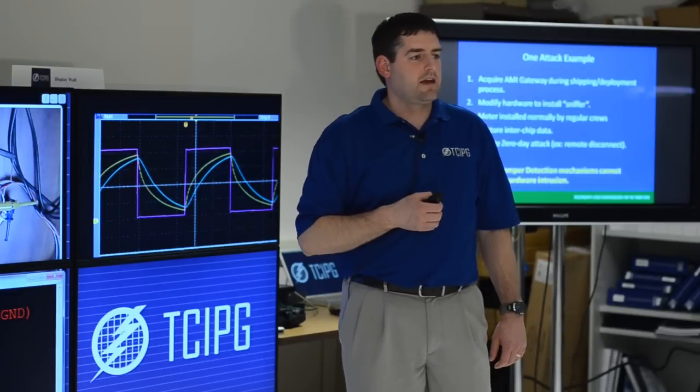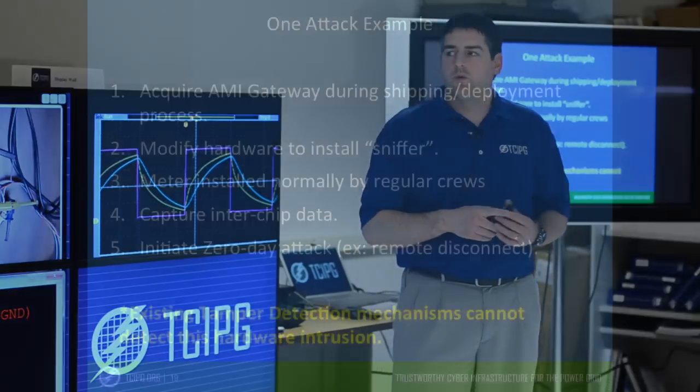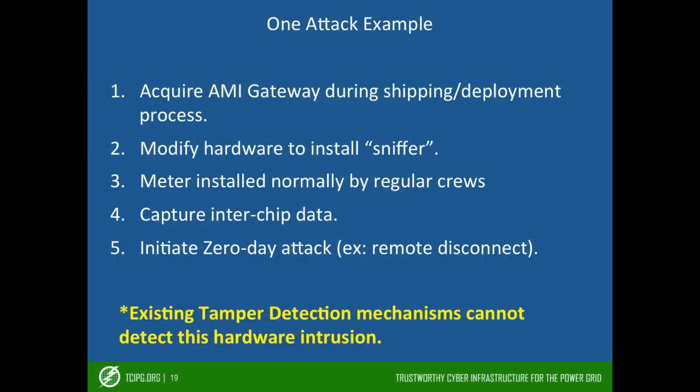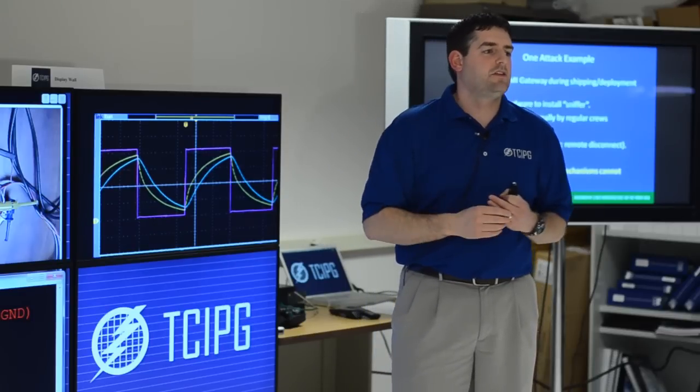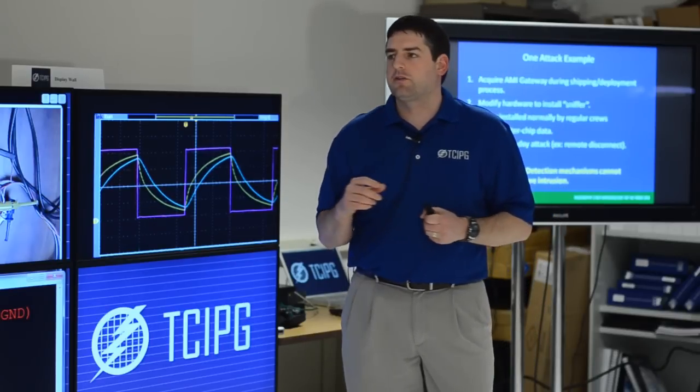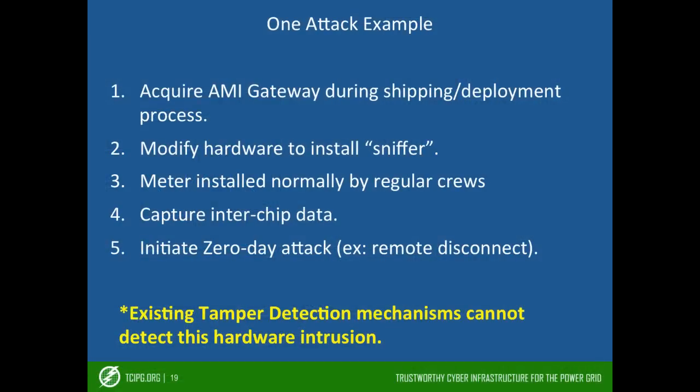I'll give you an attack example here. An individual were to acquire, for example, an AMI gateway device during the deployment phase, in transit while it's being shipped or at one of the local warehousing. This typically occurs right before it's actually installed by the contractors from the manufacturer. So we hijack the device, modify the hardware, install this bus monitor or sniffer, and then repackage it. Nobody ever noticed that it's been tampered with.